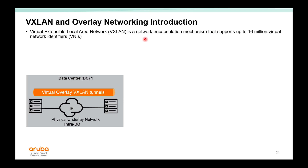VXLAN, or Virtual Extensible Local Area Network, is a network encapsulation mechanism that supports up to 16 million virtual network identifiers, or VNIs.